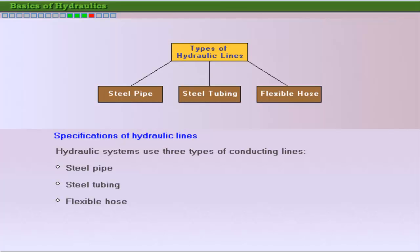Hydraulic systems use three main types of conducting lines: steel pipe, steel tubing, and flexible hose.